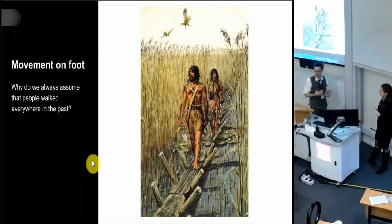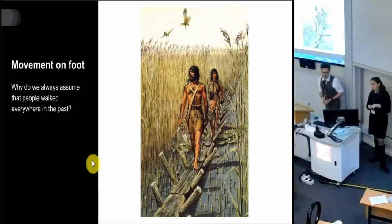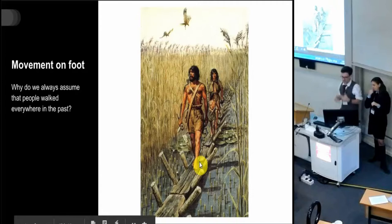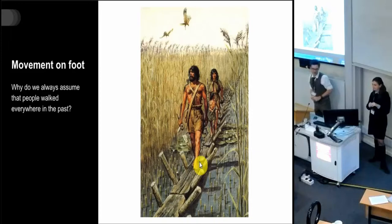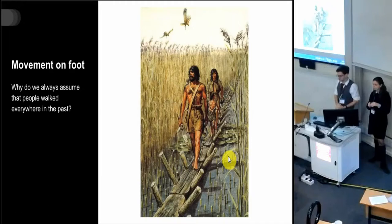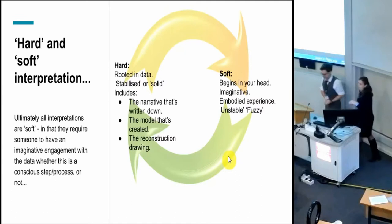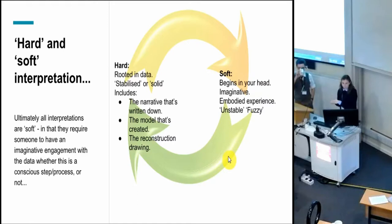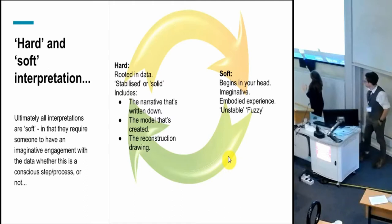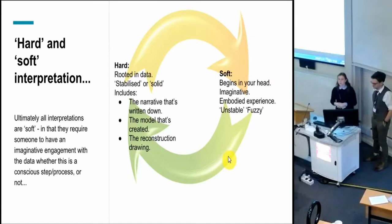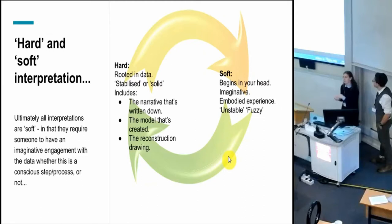You might talk about cursus monuments and people moving along those - why are they processing, why are they not running? We have Morton's reconstruction of the Sweet Track, and it's been pointed out before: there's the mantle, the family unit, the man at the front striding purposefully, moving in a very particular way. And again, that is interesting in terms of how we think about monuments. So really, what's underpinning this is that we're trying to move from our data - our hard, stabilised ideas - to actually our more soft, imaginative, embodied experience. The idea that ultimately all interpretations are soft, because they require some sort of imaginative engagement with that data of how that becomes a reality in the past.